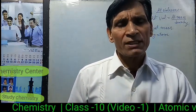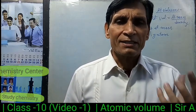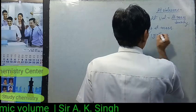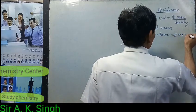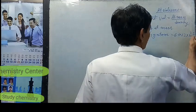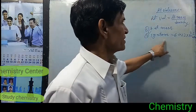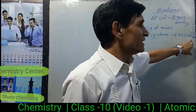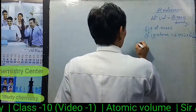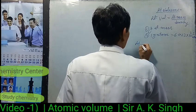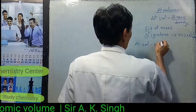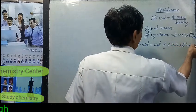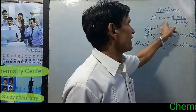One gram atom contains one mole of atoms, which is 6.022 × 10²³ atoms. So atomic volume is the volume occupied by 6.022 × 10²³ atoms of the element.